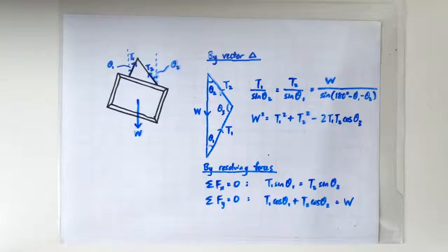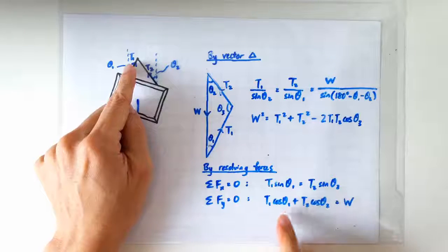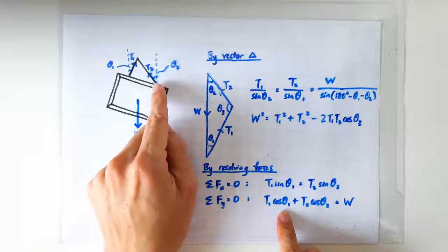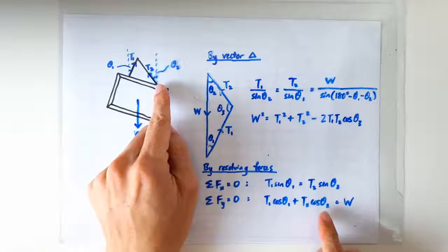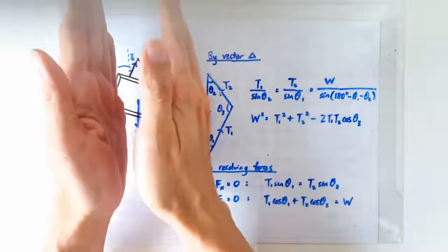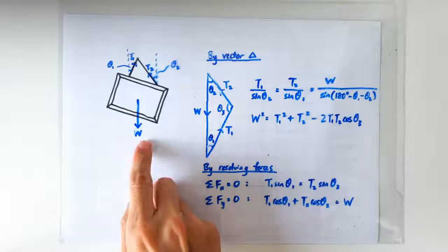We can also form a second equation by using the fact that vertically, the forces should also add up to zero. So vertically, we have the vertical components of T1, which is T1 cos theta 1. Together with the vertical components of T2, which is T2 cosine theta 2. So both T1 and T2 provide an upward vertical component, which must balance the downward vertical components of weight W.